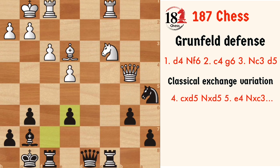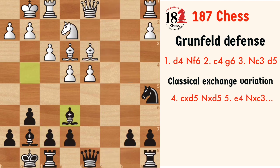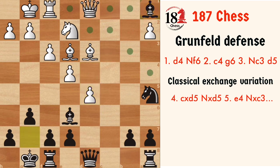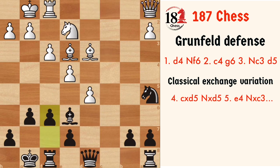Now let's look at the other move. After Be6, the other option is to play d5, sacrificing the exchange. After Bxa1, Qxa1, the dark squares are completely weak and we have to defend them, so f6 is played.